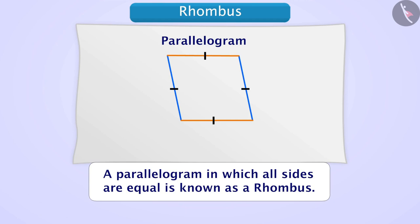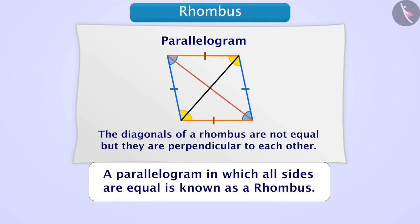A rhombus has its own properties. Its opposite sides are parallel and they are equal. If we measure all its angles, we find that opposite angles are equal. If we talk about its diagonals, the diagonals of a rhombus are not equal, but they intersect each other at 90 degrees, which means they are perpendicular.